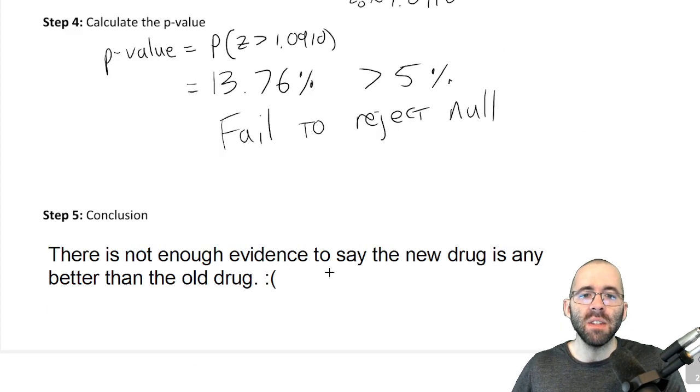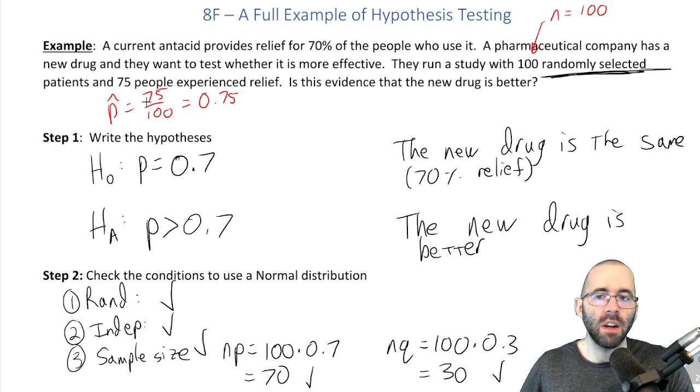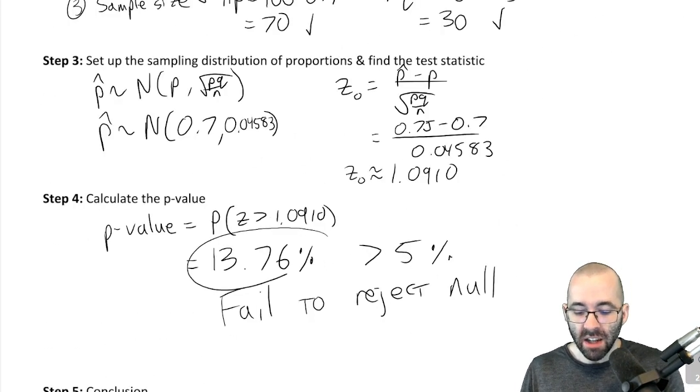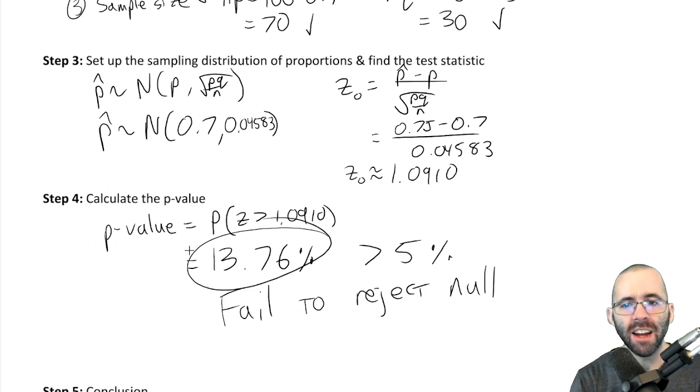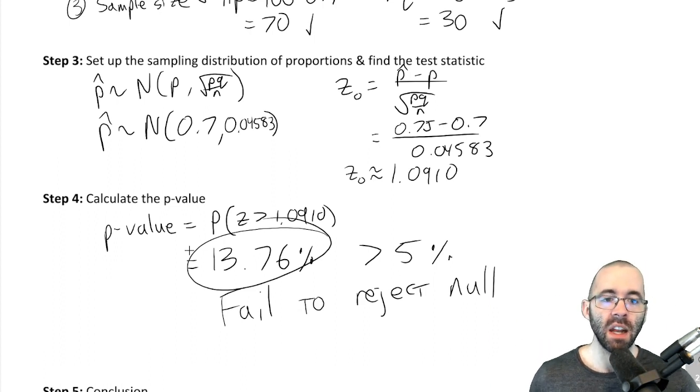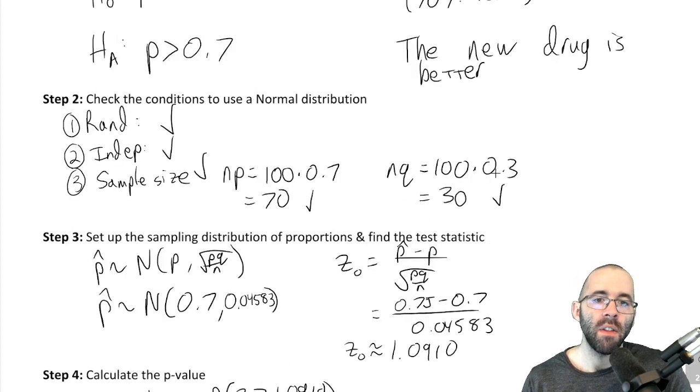And what we just did is we said this is not enough evidence. Like, it's possible to have given 100 people the old drug and have them have this many people find relief. And in fact, we found that likelihood. We said that 13.76% of the time you could have given the group the old drug and gotten this good of results. That's what this probability means. We found that yes, almost 14% of the time you could have given the old drug and had this good stuff happen. So we're not proving anything's different because that would be perfectly believable. Unlikely, it's not a huge percent, but perfectly believable. That's how this all ties together.